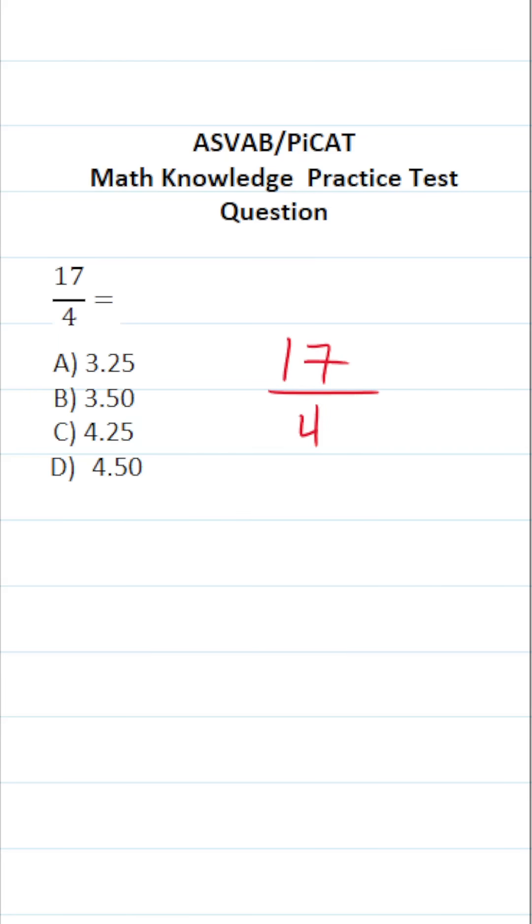And the way we do that is by reading this fraction as long division. Again, we could read this as a fraction as 17 over 4, or we can read it as long division as 17 divided by 4.